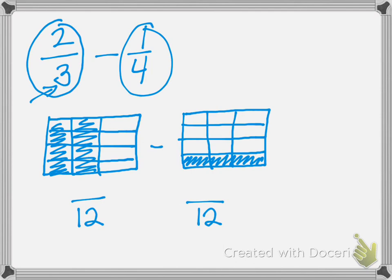Now we're going to write how many sections are colored in on the first rectangle — we count 8 colored sections. And in the second rectangle we count 3 colored sections.